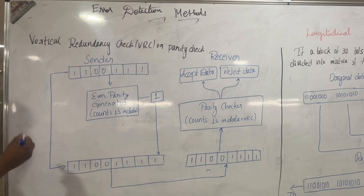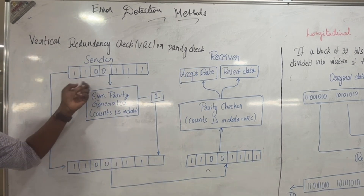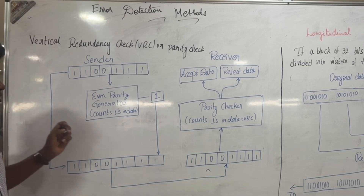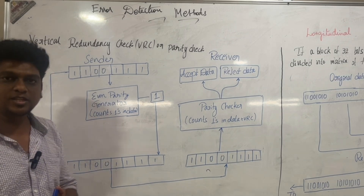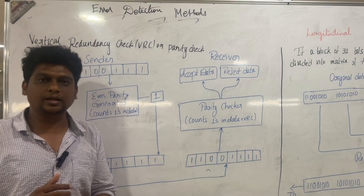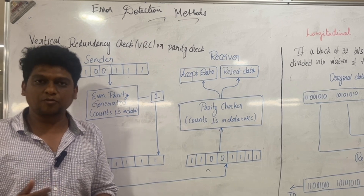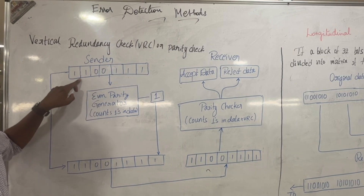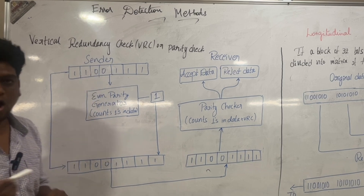First, we will look at vertical redundancy check. Here we have a sender and a receiver. The data sent by the sender is 1100111, which is 7 bits total. It uses two types of parity — odd parity and even parity. In odd parity, the number of ones is odd; in even parity, the number of ones is even. In this example, counting the ones gives us 5, which is an odd number.